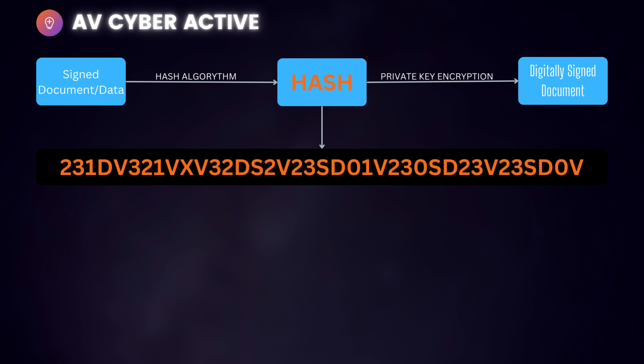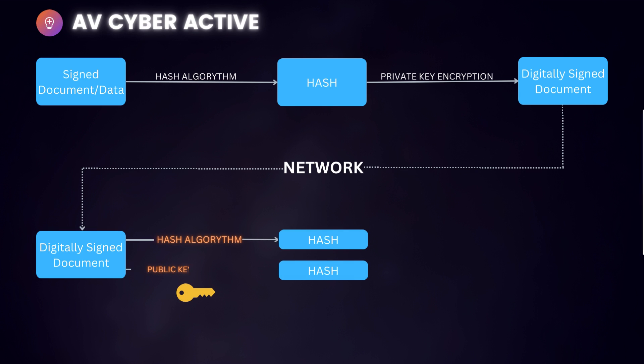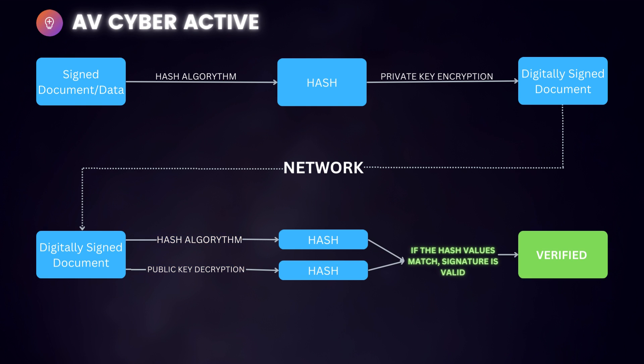In the next step, you generate the hash once again from the received data, which should produce the same hash value as the original. Then you decrypt the encrypted hash using the public key — remember, we encrypted it using the private key, so it can only be decrypted using its own public key. If both hashes match, it means the data is verified and has not been tampered with.